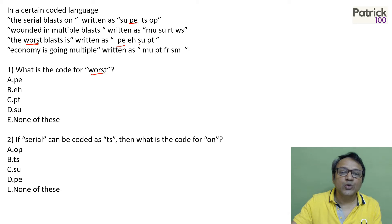Then you have SU which is there in second. Then PT which is there in last. Even worst should be EH. So B option is the answer. Look at the code which is only in the third one because worst is only in the third. Has to be EH.